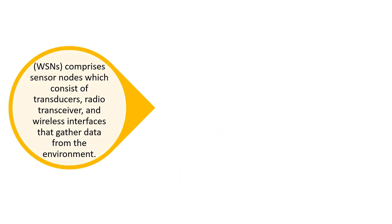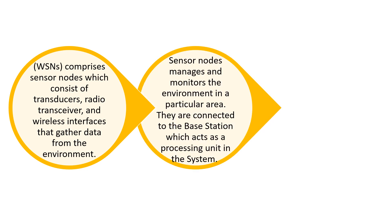WSNs comprise sensor nodes that consist of transducers, radio transceivers, and wireless interfaces that gather data from the environment. The sensor nodes manage and monitor the environment in a particular area, and they are connected with a base station which acts as a processing unit in the system.